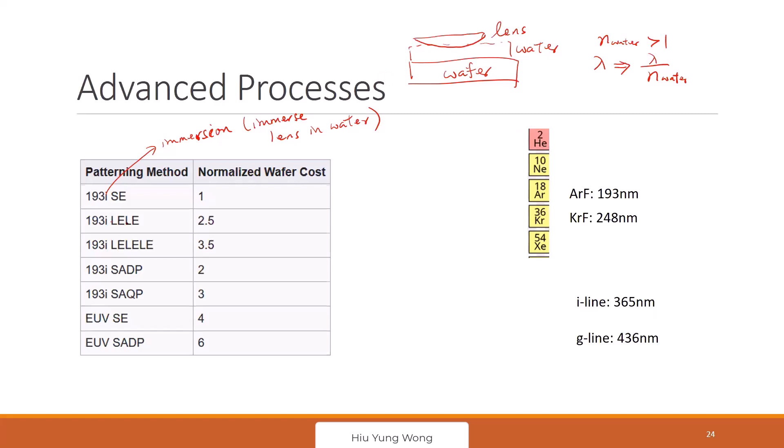But finally, this is hitting the limit. Even we use LELE, even three times LELELE, self-aligned double patterning or even self-aligned quadruple patterning. We do it three, four patterning. Still not enough. Nowadays, we went to something called extreme UV light, which is basically a soft X-ray. It has 13.6 nanometer wavelength. This is very expensive, very bulky.